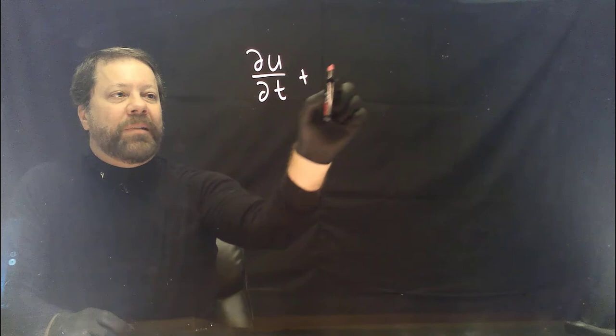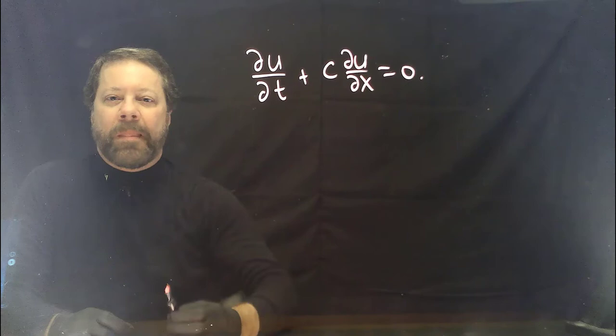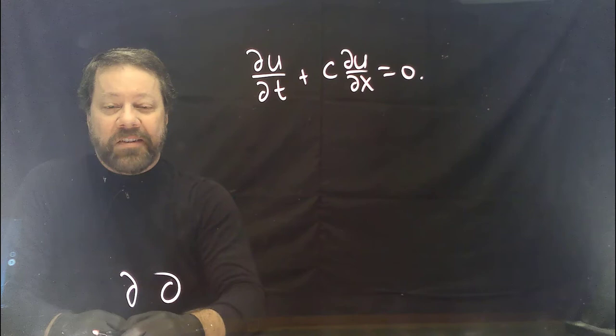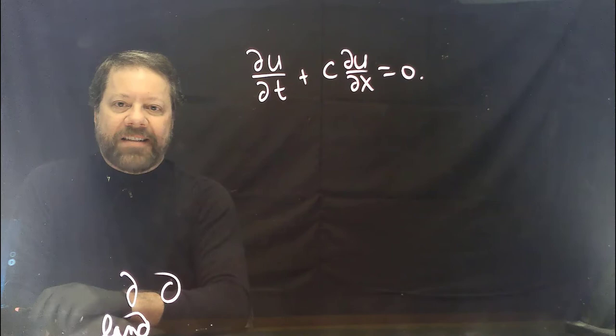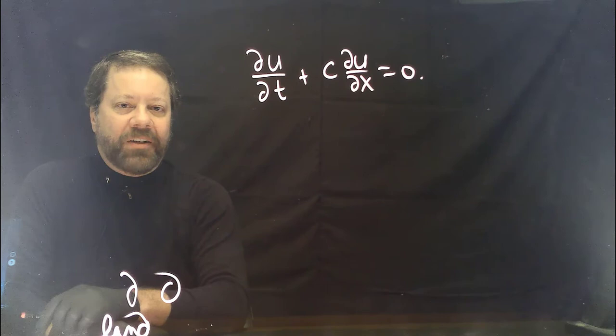A partial differential equation of interest is du/dt plus c times du/dx equals zero. By the way, this symbol — the partial derivative symbol — is a stylized letter d. In old days, if you wanted to write the word 'land,' you would often curl that last d way over like this, which was very common in old-style writing.